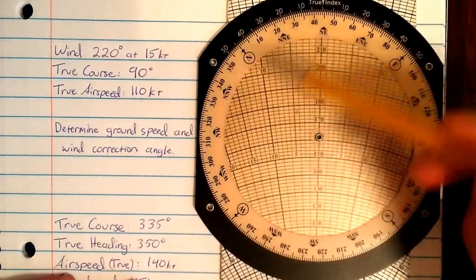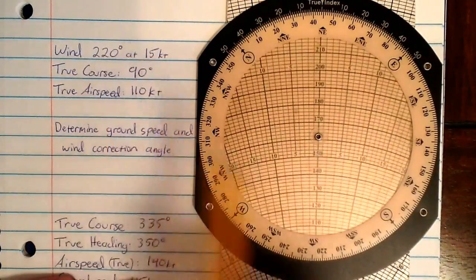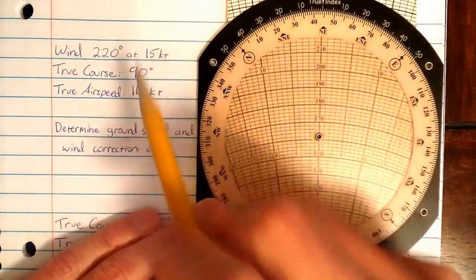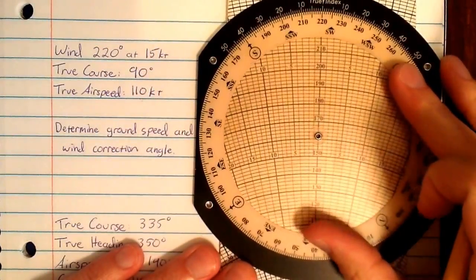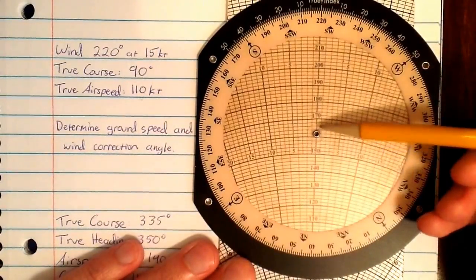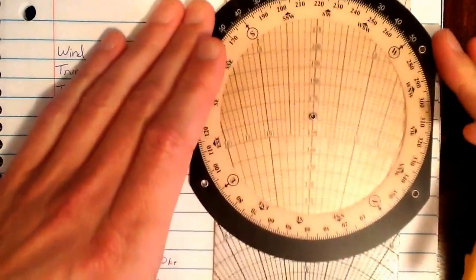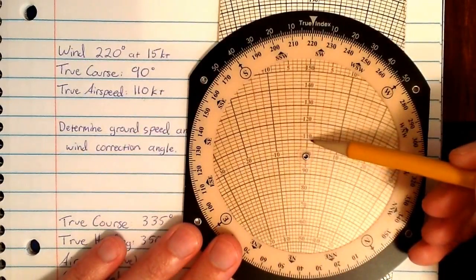So to start, we're going to set the flight computer up in wind mode. We have our wind information. So let's set the wind direction at 220 degrees. And let's set the wind speed at 15 knots, simply by measuring the amount up from the grommet. So for ease, I'm going to set the grommet at 100, so I can easily count up 10, 15.